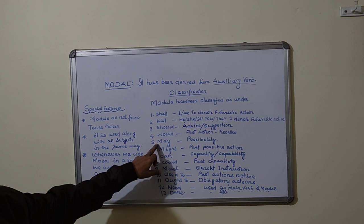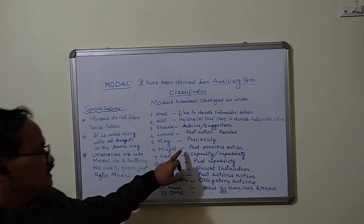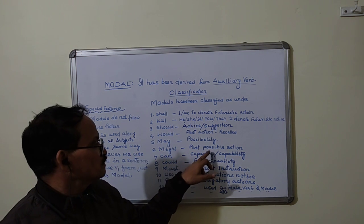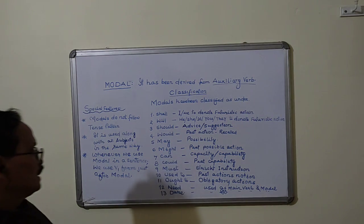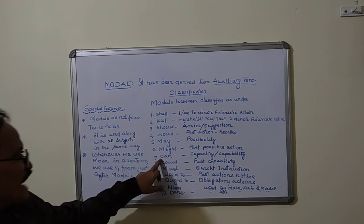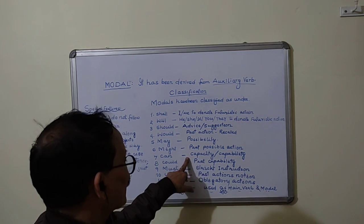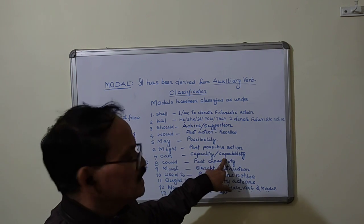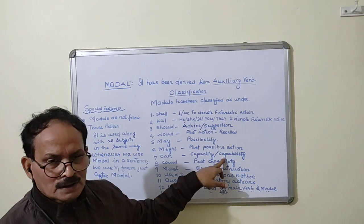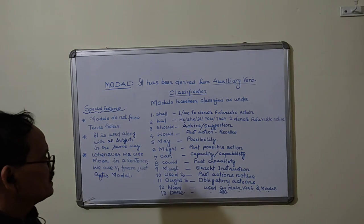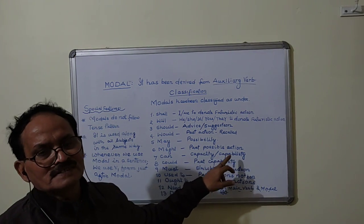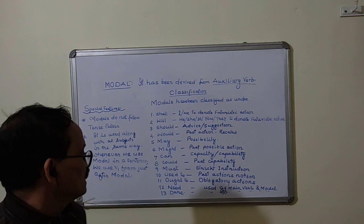If I say you can pass the exam means you are capable to pass the exam. Might is the past form of may which is used to denote past possible actions taken by the subject. Can is such kind of a model which is used to denote capacity or capability of an individual. For example, he can pass the exam means he is capable to pass the exam.